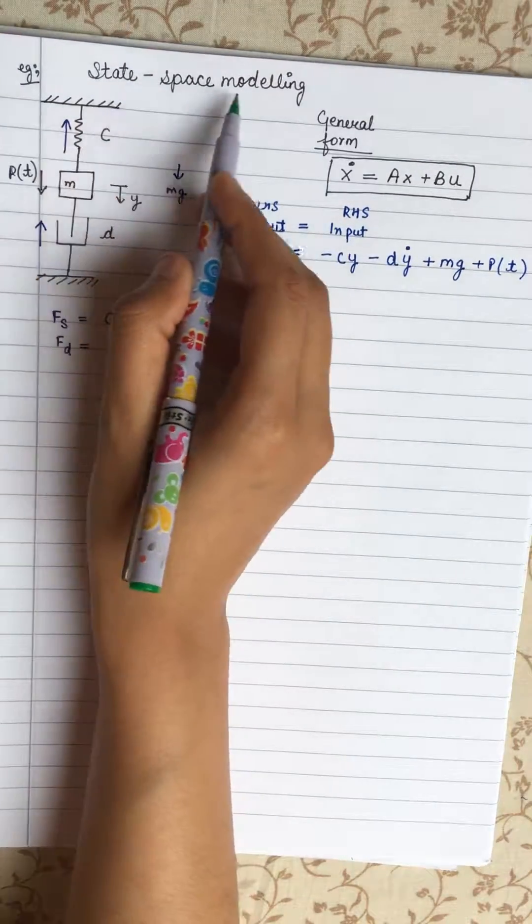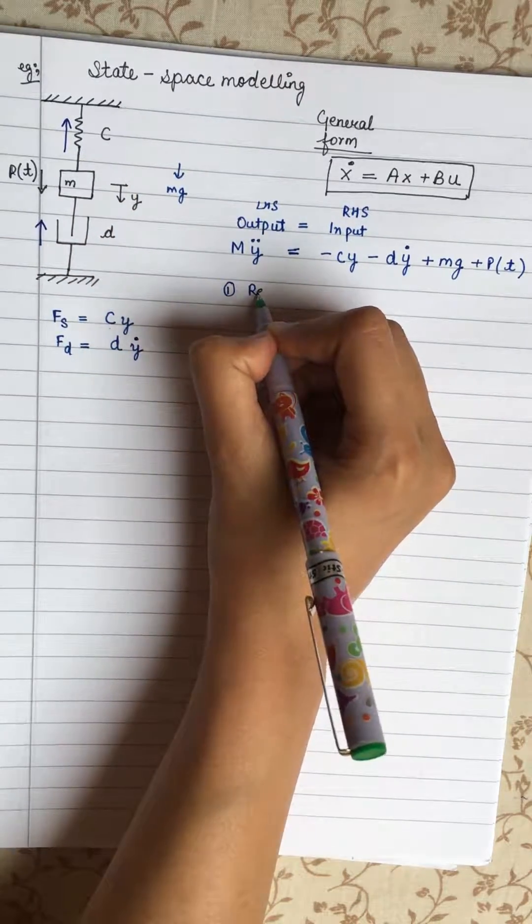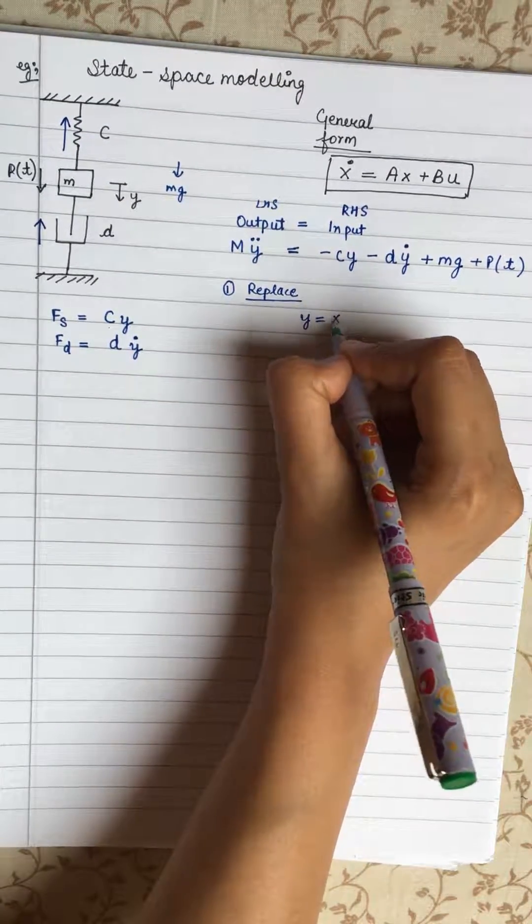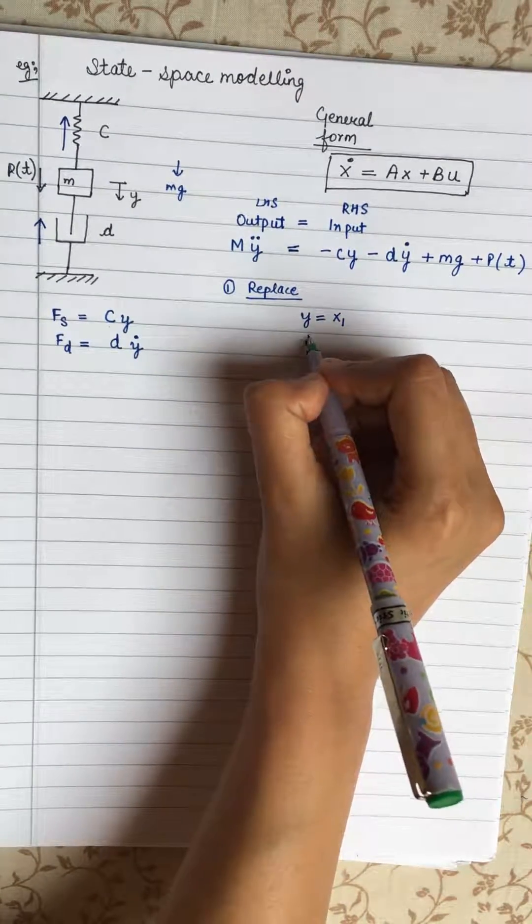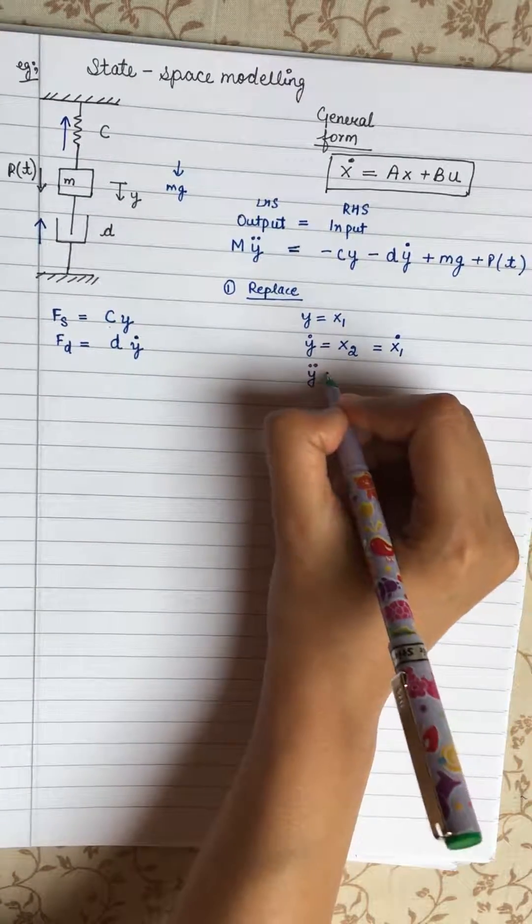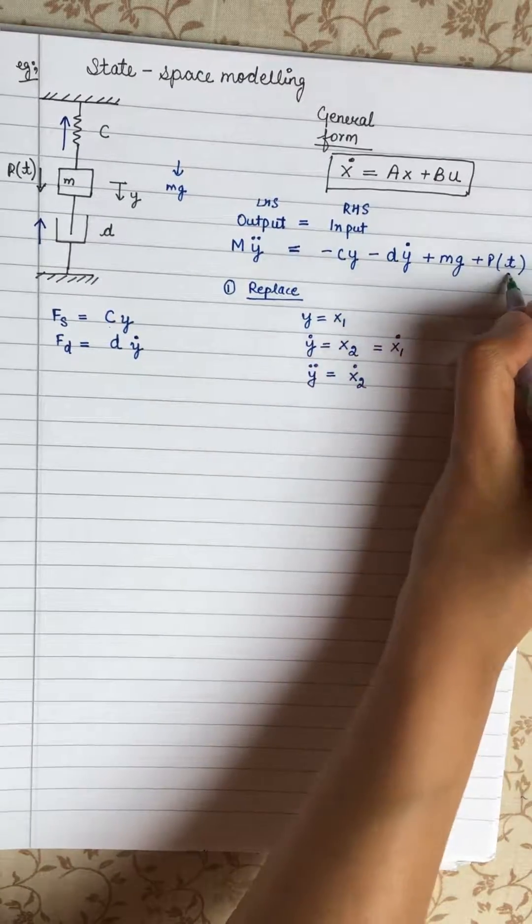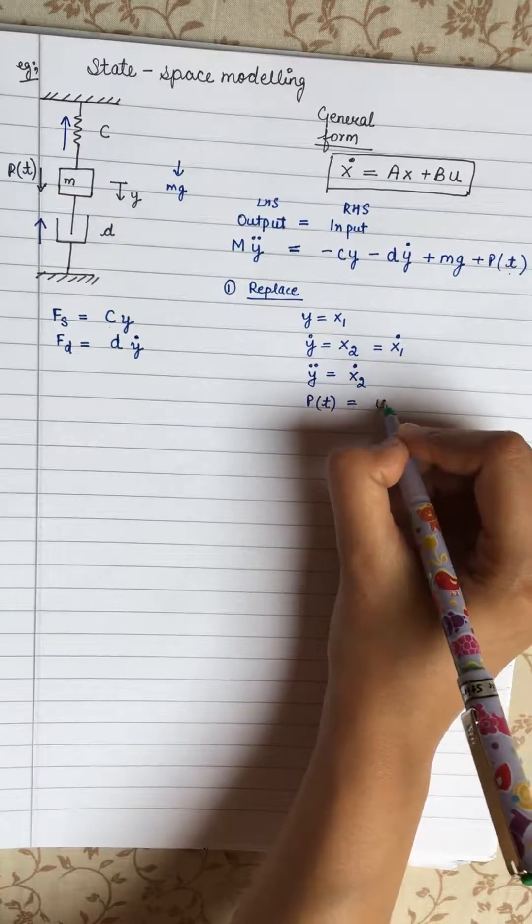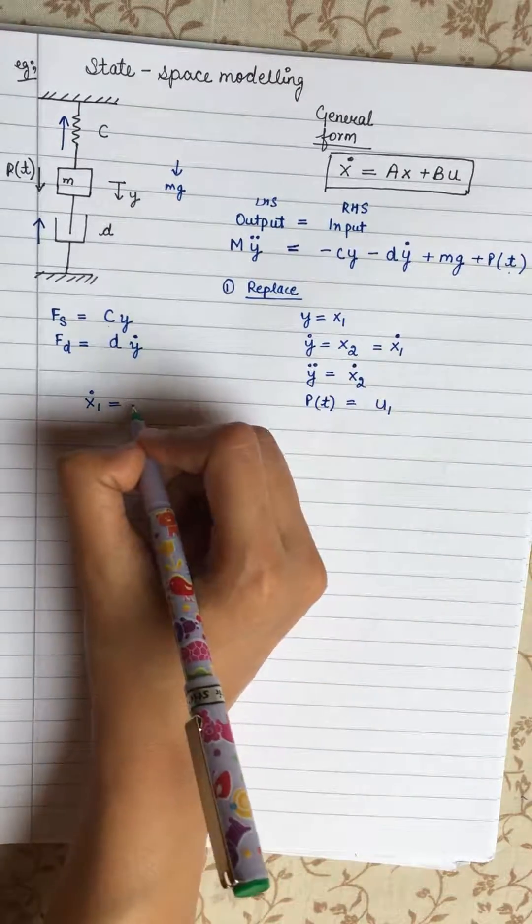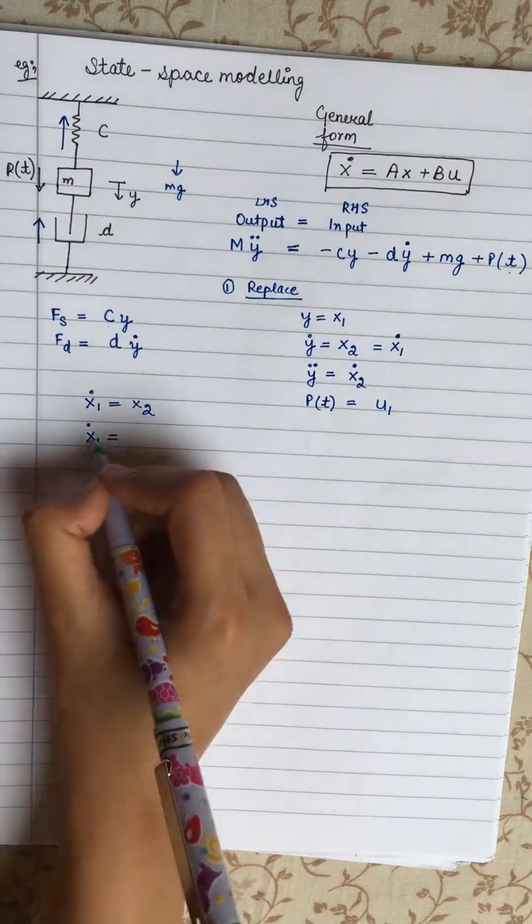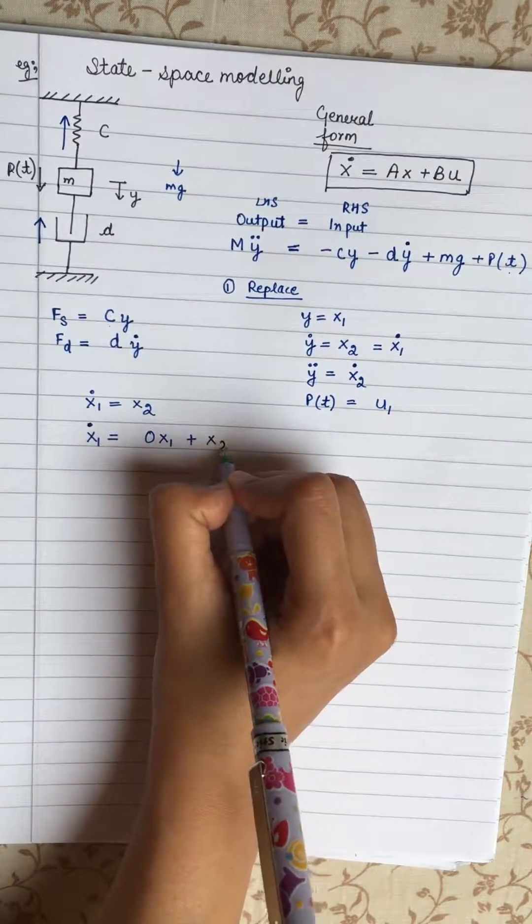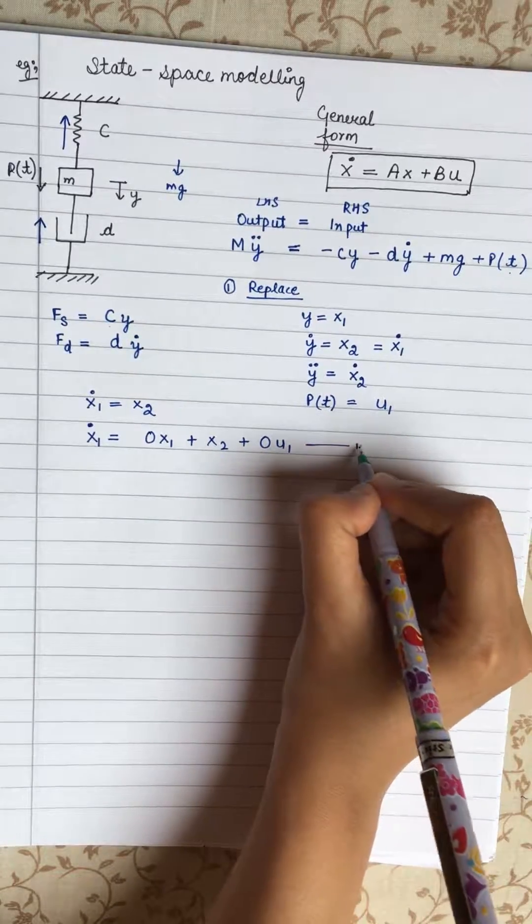Now we remember from the state space modeling, the first step is always to replace. So now our Y will be our X1. Y dot will be our X2 which can also be written as X1 dot. Y double dot will be equal to X2 dot. And our input P T will be equal to U1. From this equation, we figured out that X1 is equal to X2. We can write down this equation as 0 X1 plus X2 plus 0 U1. So this is our first equation.